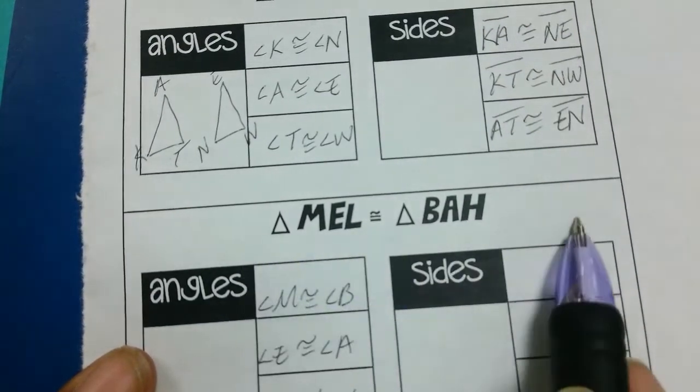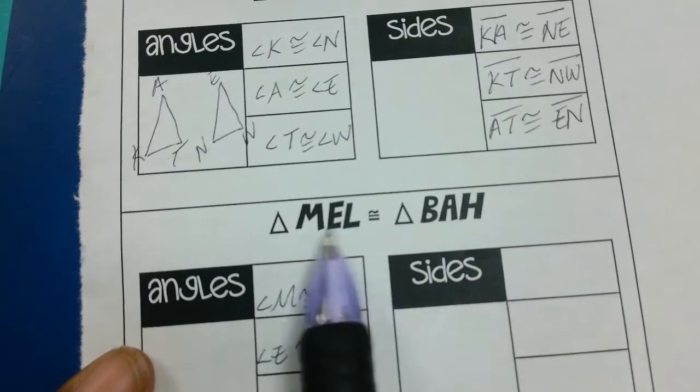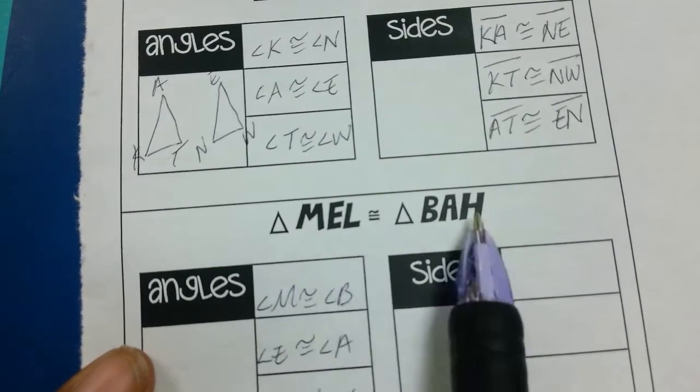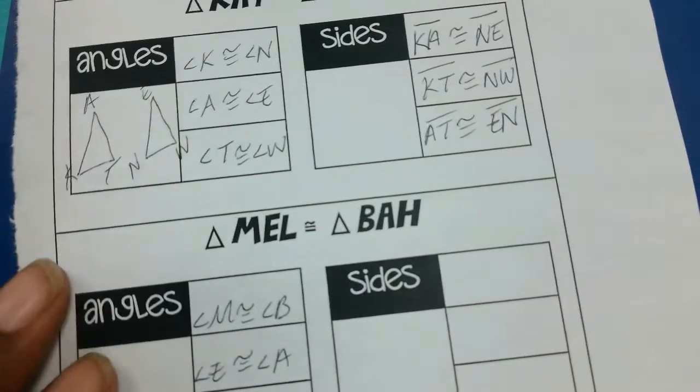I can just get that from the name. That's why it's important when you write your triangle congruence statement or congruency statement, that's why it's important that order matters, because how it's written is telling me which parts correspond.